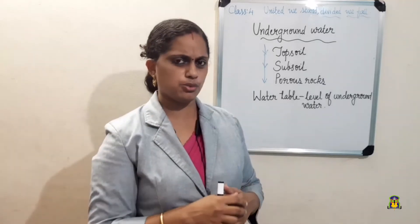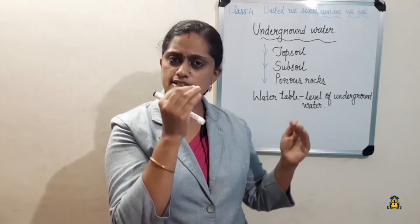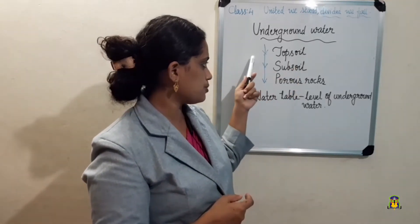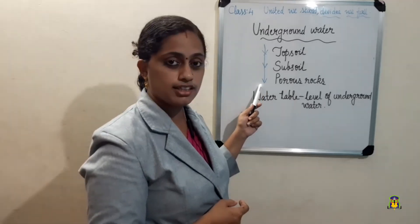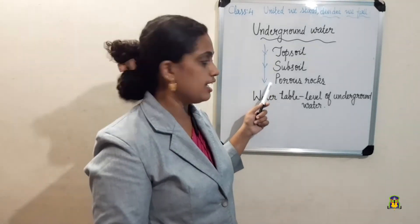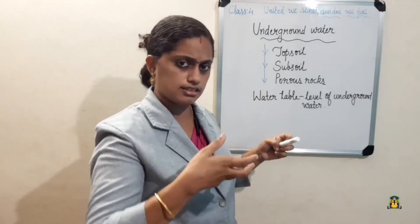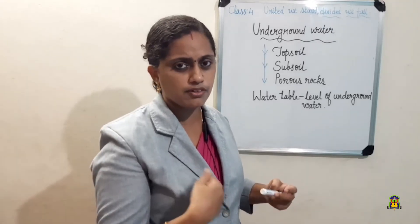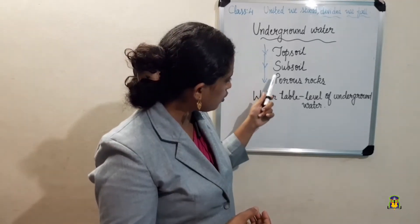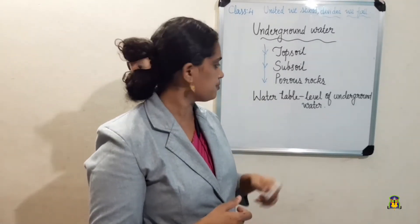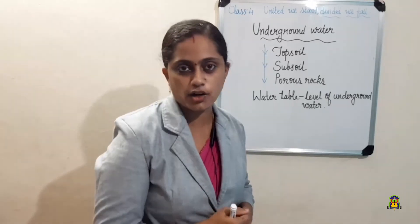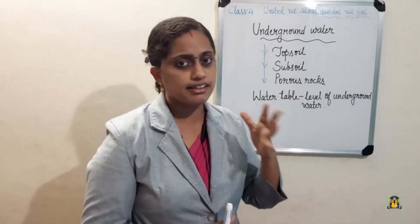Next is underground water. Rainwater reaching the earth goes through the topsoil, then the subsoil, and reaches porous rock underground. This water is stored in porous rocks and is called underground water. We take this water through water pumps and wells. The level of underground water in a particular area is called the water table.